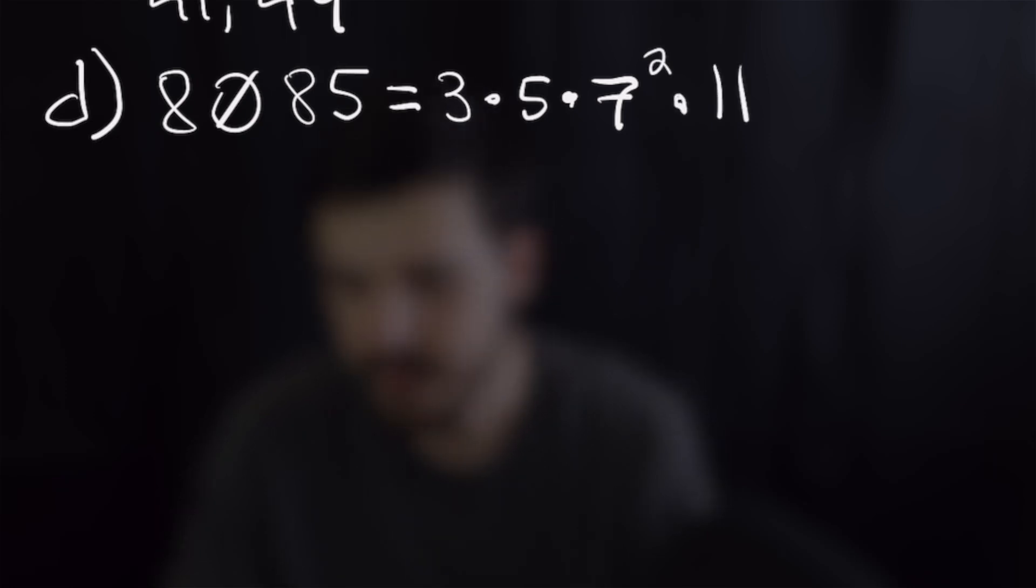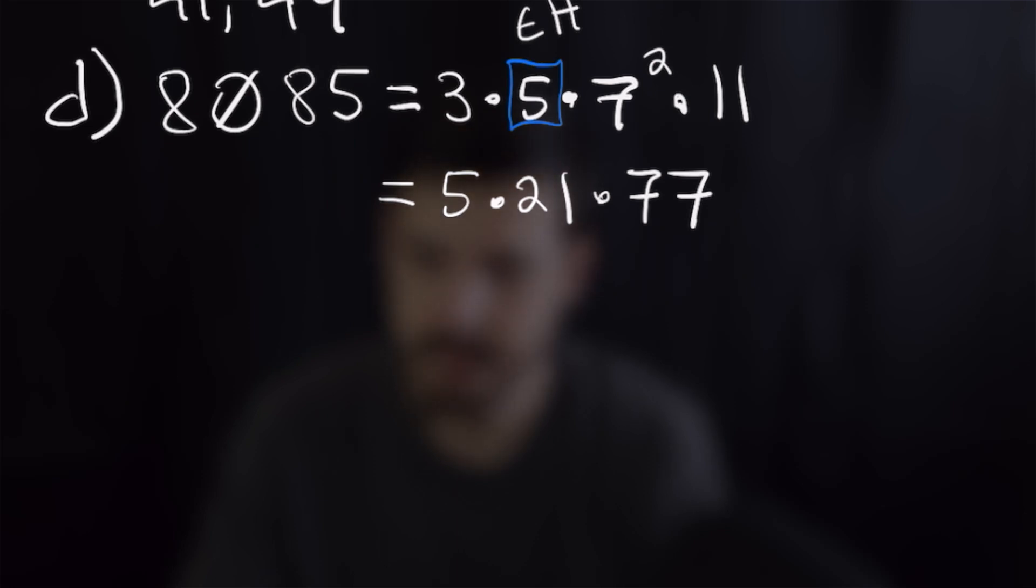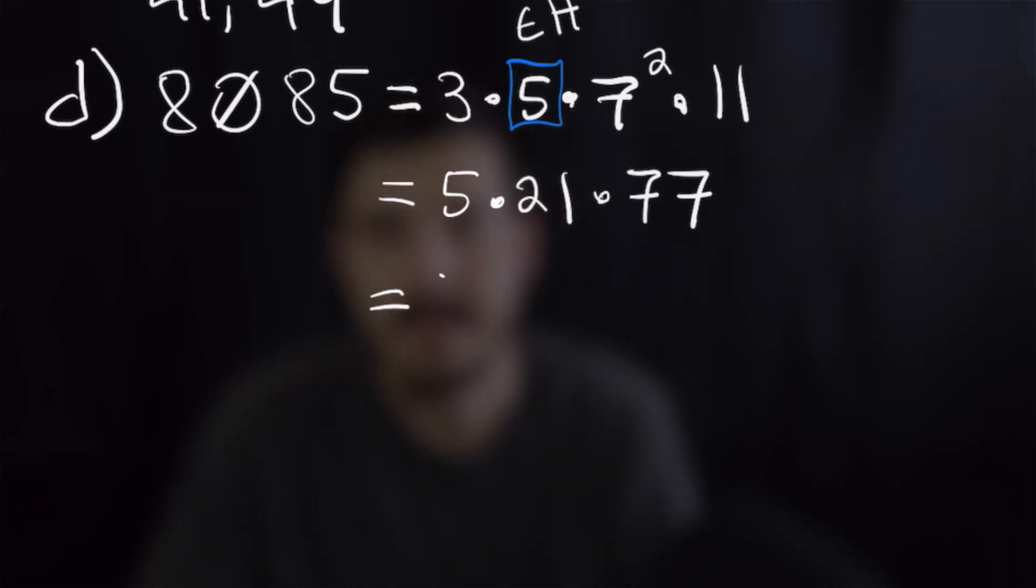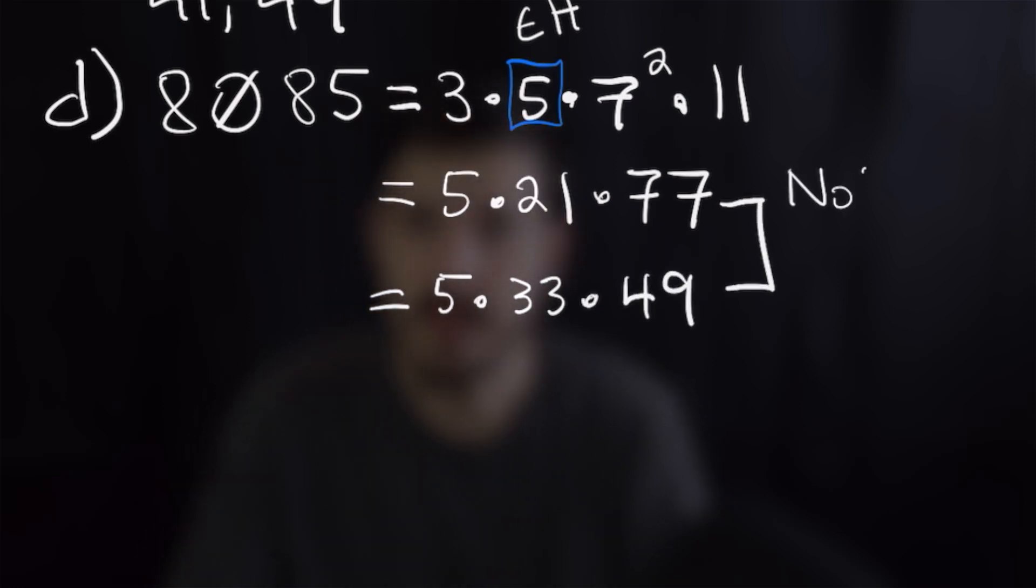Part d just asked us to give an example that factorization into Hilbert primes is not unique. So we're just going to pick a number, let's pick 8085. Well if we split that up into real prime numbers we will have 3 times 5 times 7 squared times 11. Now 5 is already a Hilbert prime so we don't need to do anything to that but we need to combine the other primes into Hilbert primes and we're going to see that if we do that there are multiple ways we can represent this number. So the first way we're going to do it is 5 times 21 times 77 and indeed all three of those are Hilbert primes but we could just as easily separate it into 5 times 33 times 49 and those three are Hilbert primes as well. Thus Hilbert prime factorizations are not unique and that finishes the last problem for this video and that's a good place to stop.